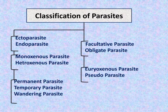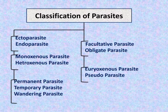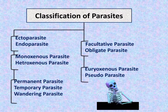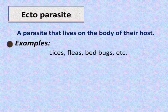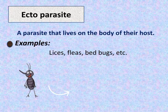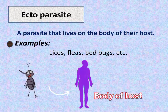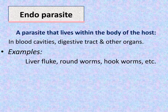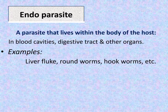Additional types include eurioxenous and pseudo parasites, permanent parasites, and wandering and temporary parasites. Ectoparasites live on the body of their host — examples include lice, fleas, and bedbugs.